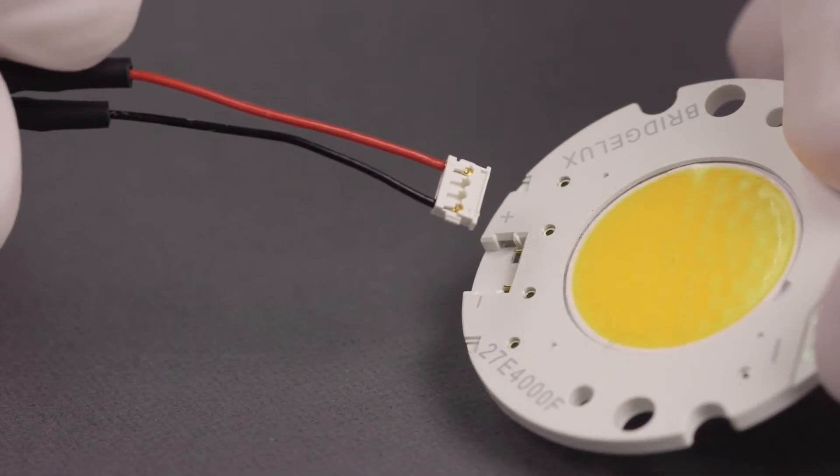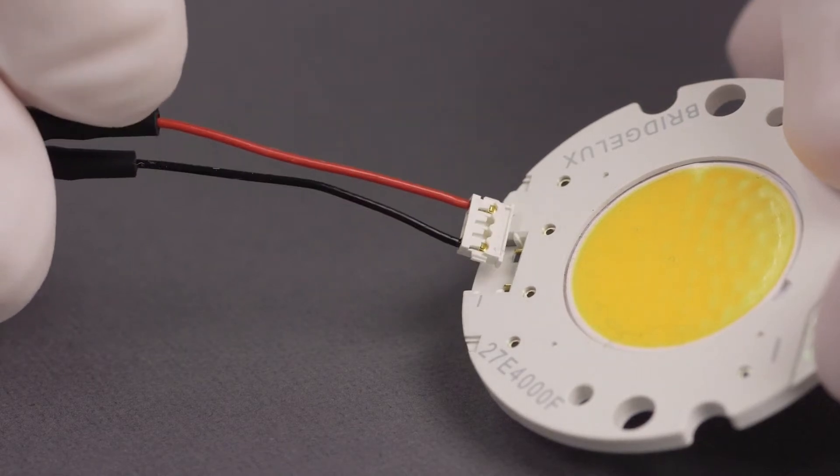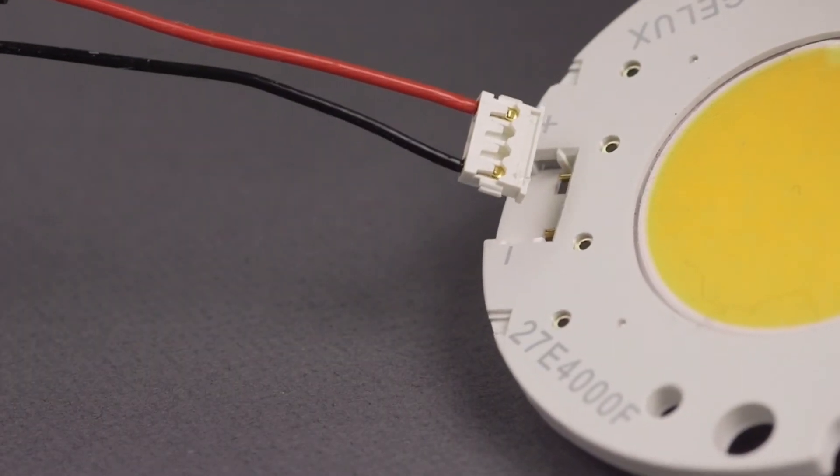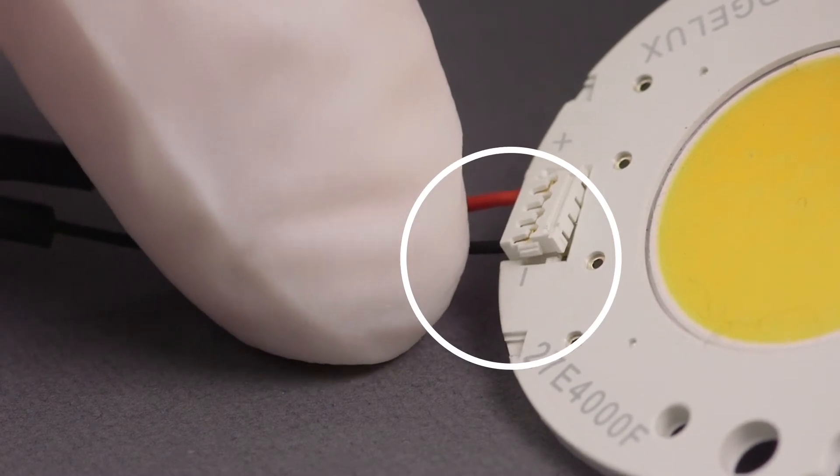The connector has specific mounting alignment features. The bottom side is smoother than the top side. Additionally, you can line up the black wire side of the connector with the minus sign of the connection port.